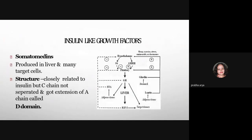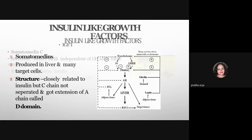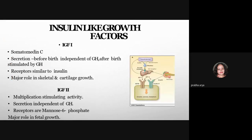Insulin-like growth factors, also called somatomedins, are produced in the liver and many other cells. Their structure is closely related to insulin, which is why they are called insulin-like growth factors. Insulin consists of an A chain and B chain with an intermediate C chain. In IGF, this C chain is intact, and there is an additional extension called the D domain on the A chain, which distinguishes it structurally from insulin.